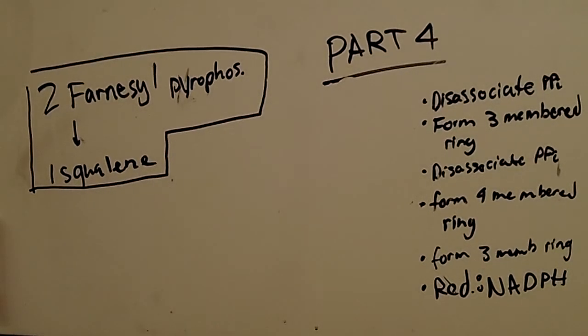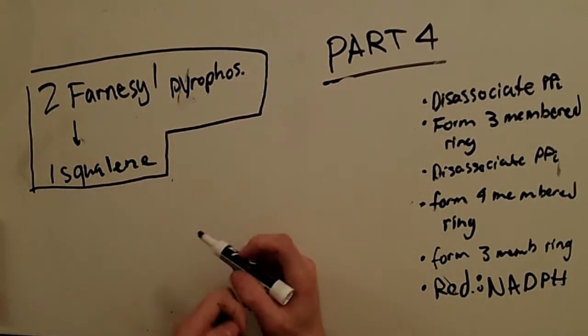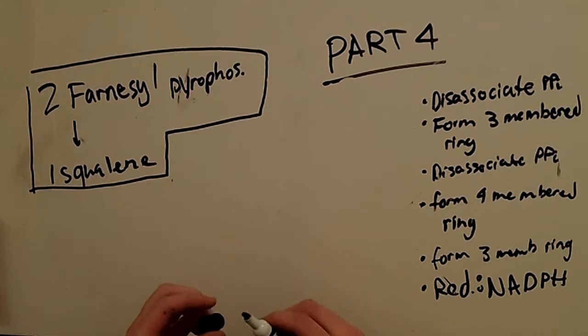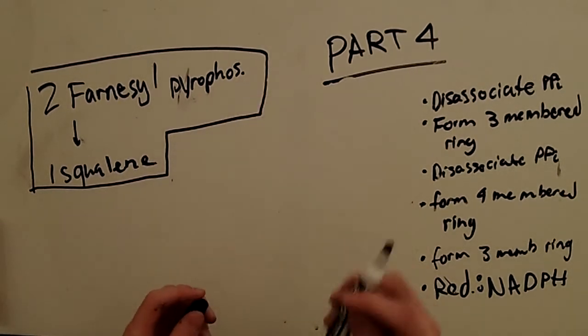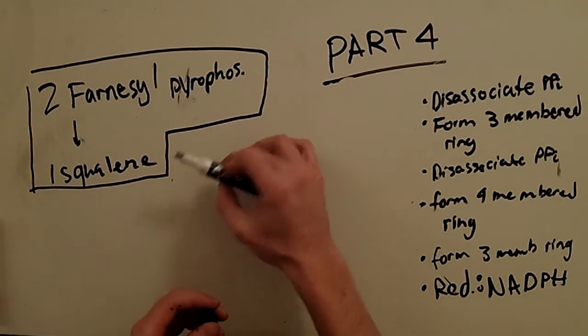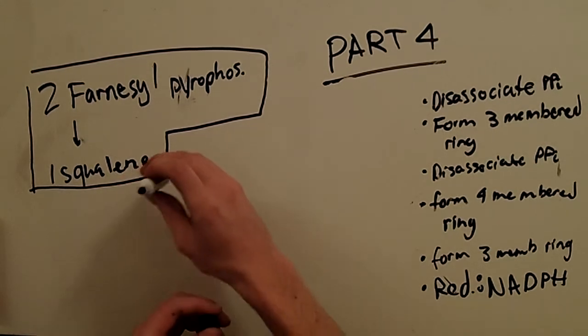Okay, welcome to part four of our synthesis of cholesterol. What we're going to do in this part, we're going to take two farnesyl pyrophosphates and add them together essentially to form a squalene.